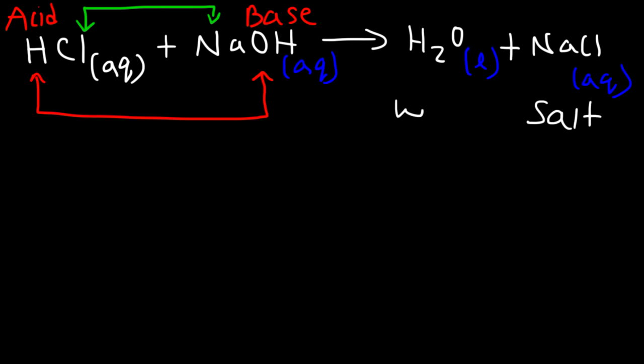Next question: zinc metal reacts with aqueous nickel chloride to produce zinc chloride and nickel metal. What type of reaction? A pure element reacts with a compound to produce another compound and a pure element. This is a single replacement reaction — zinc replaced nickel, so only one replacement took place.